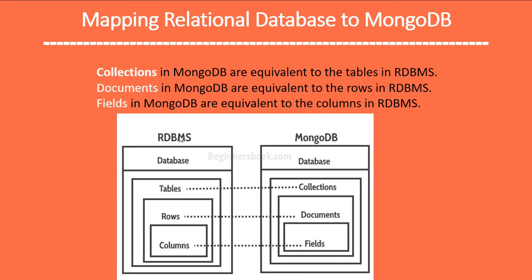Looking at the diagram, RDBMS has components like database, tables, rows, and columns, while MongoDB has components like database, collections, documents, and fields. Database terminology in MongoDB is similar to a database in RDBMS. Collections in MongoDB are equivalent to tables, documents are equivalent to rows, and fields are equivalent to columns in RDBMS.